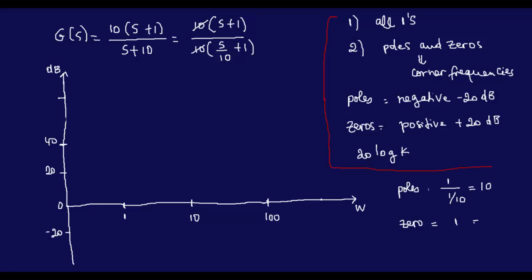This is a fairly easy one, but I wanted to start with this one. So you have a pole at ten. A pole gives you a negative slope, and a zero is a positive slope of twenty dB. Your constant gain is twenty log of k. Here we don't have a gain — we do, but it's one. Log of one is zero, so we don't really have anything. So we're going to start at zero dB. Unless you have a pole at the origin — like s here, we're going to do an example on that — the plot will start at the constant gain.